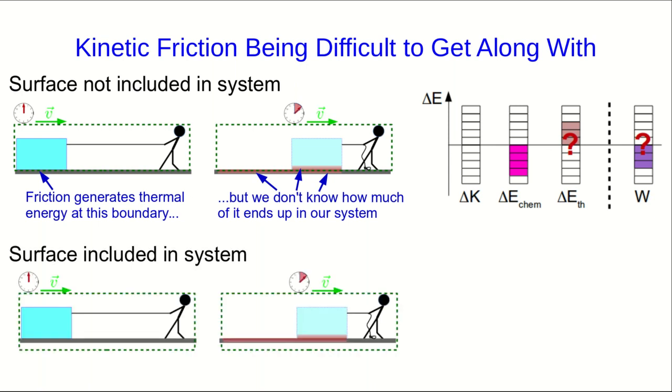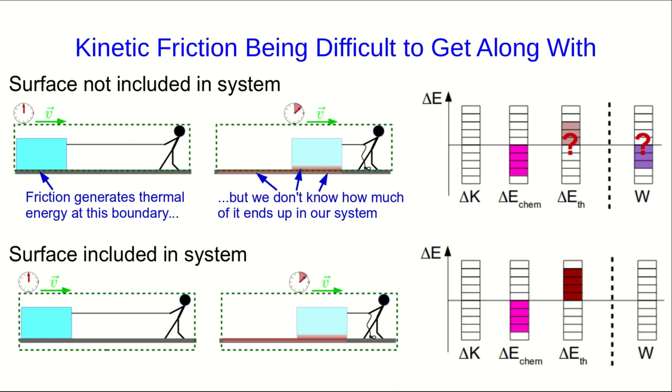What if we include the surface in the system? That makes things much simpler. Now we know that all of that thermal energy is in the system, and so what we have going on is just that chemical energy is converted to thermal energy. We still don't know how to calculate that thermal energy change, but we will in a future lecture.